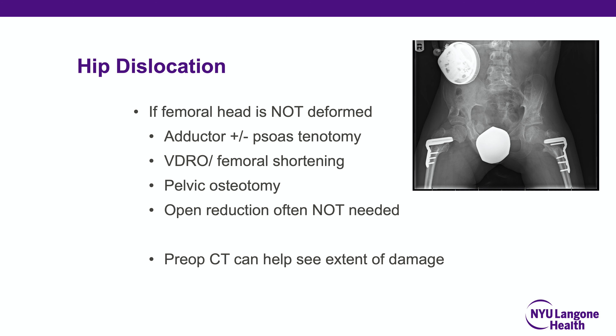For hip dislocations, the boards distinguish whether the femoral head is deformed. If not deformed — usually in children dislocated less than a year — one can proceed with adductor tenotomy, iliopsoas tenotomy if there's a hip flexion contracture, and a varus derotation osteotomy with small femoral shortening. Bilateral Dega pelvic osteotomies may also be done. Open reductions are sometimes helpful for children with enormous contracture or long-standing dislocation. A pre-op CT or MRI helps judge preoperative damage.